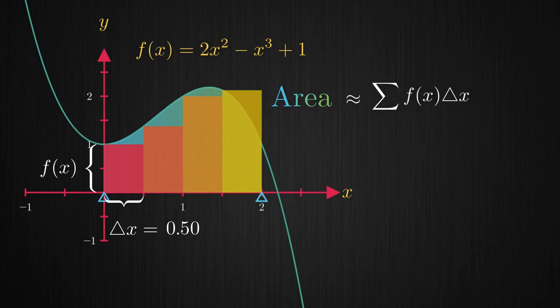If we fit more and more narrower rectangles within the same interval which corresponds to Δx approaching 0, the sum of areas of each of these rectangles converges to the area under the curve that we are looking for.